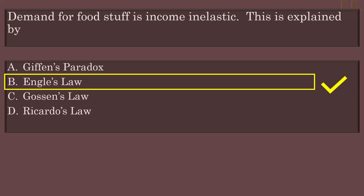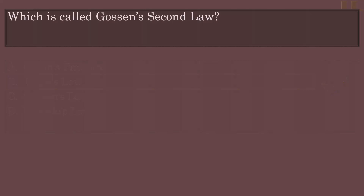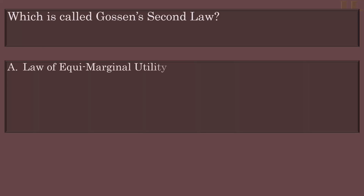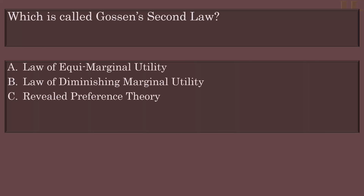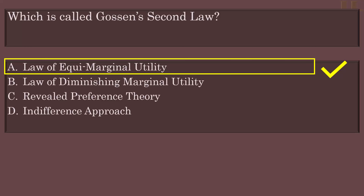The next question refers to a principle which is called Gossen's Second Law. The options are: Law of Equi-Marginal Utility, Law of Diminishing Marginal Utility, Revealed Preference Theory, Indifference Approach. Gossen's Second Law is related to the Law of Equi-Marginal Utility.